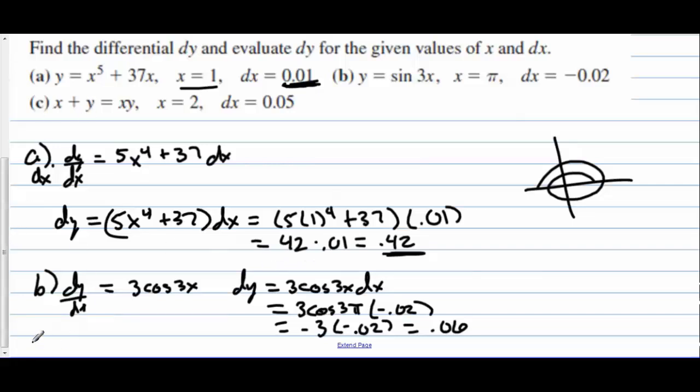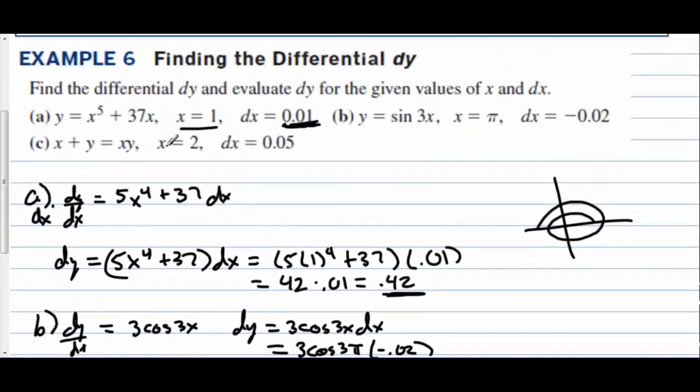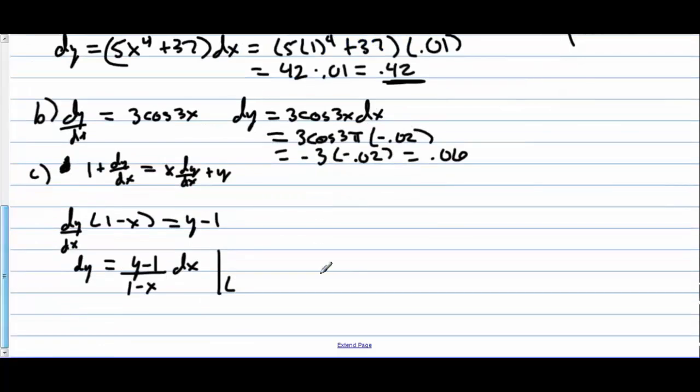Letter c, we want to take the derivative implicitly. So we have 1 + dy/dx equal to first times derivative of second plus second times derivative of the first. Now we want to get dy/dx by itself and we can factor once we minus this x over. So we have 1 - x, and then we want to minus the 1 over which is y - 1. So dy = (y - 1)/(1 - x) dx. We want to evaluate that when x is 2, but we have to find out what y is. So we can plug 2 into the function, which is 2 + y = 2y, minus the y over and we find out that y is 2 also. So we have the point (2, 2).